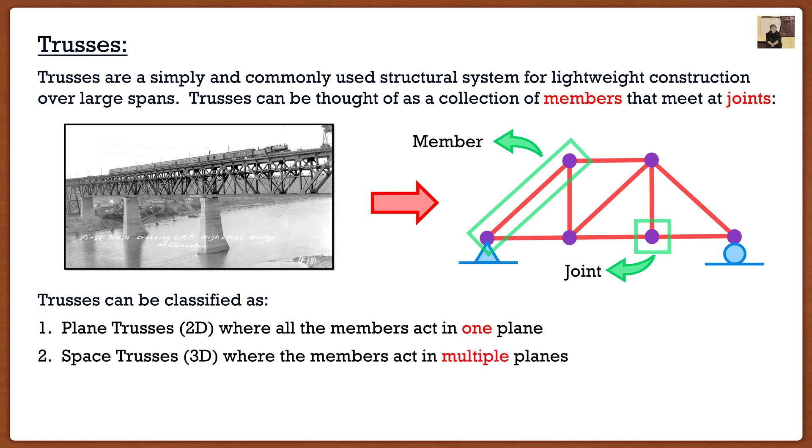Now the second kind of truss is what we call a space truss, and these are basically 3D trusses where the members act in multiple planes. For those of you guys that like to go to parties or raves, you've usually seen the stage set up with these kind of trusses. These ones get a little bit more complex to analyze. But good thing for us, in this course, we are going to be focused on the first type, which are plane trusses. Nice 2D trusses. All the questions you guys will receive will look something like the one on the top right.